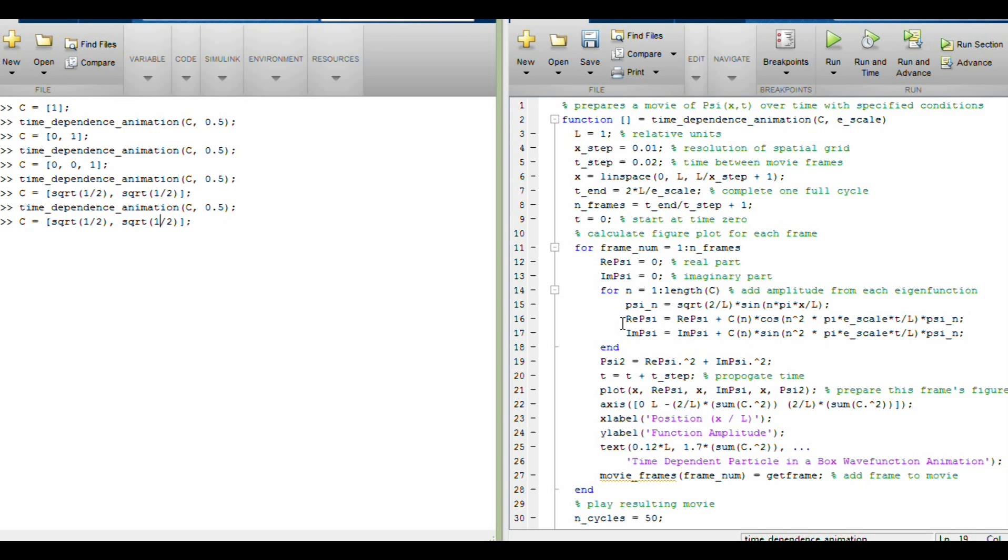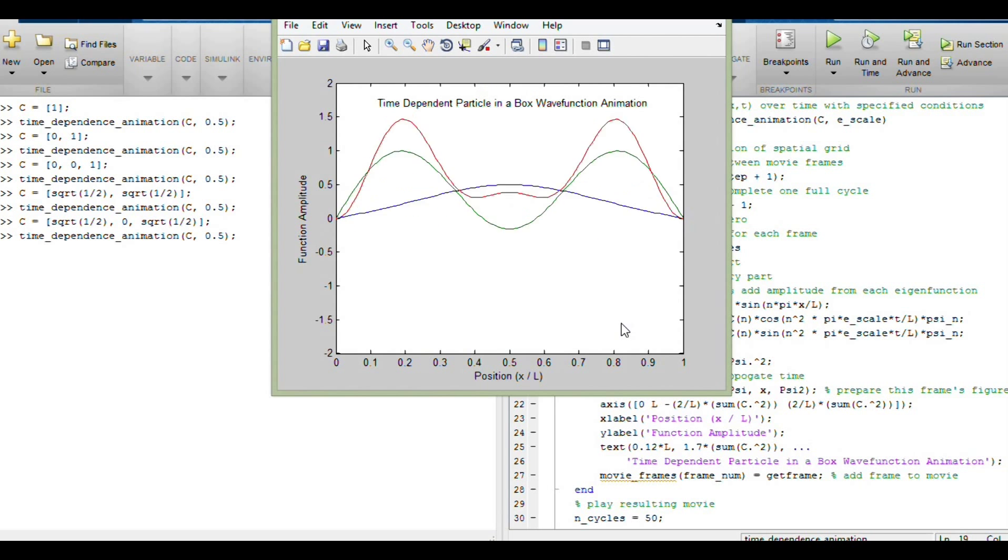So if we look at that same thing with the particle half being in n equals 1 and half being in n equals 3, this time we see those nodes oscillating. So on average, the particle is still 50% to the left of this center here, 50% to the right. But if you calculate the expectation of x squared of position squared, it would change over time. But the expectation for position isn't going to change here because it's symmetric, and it's the same on the left as it is on the right.